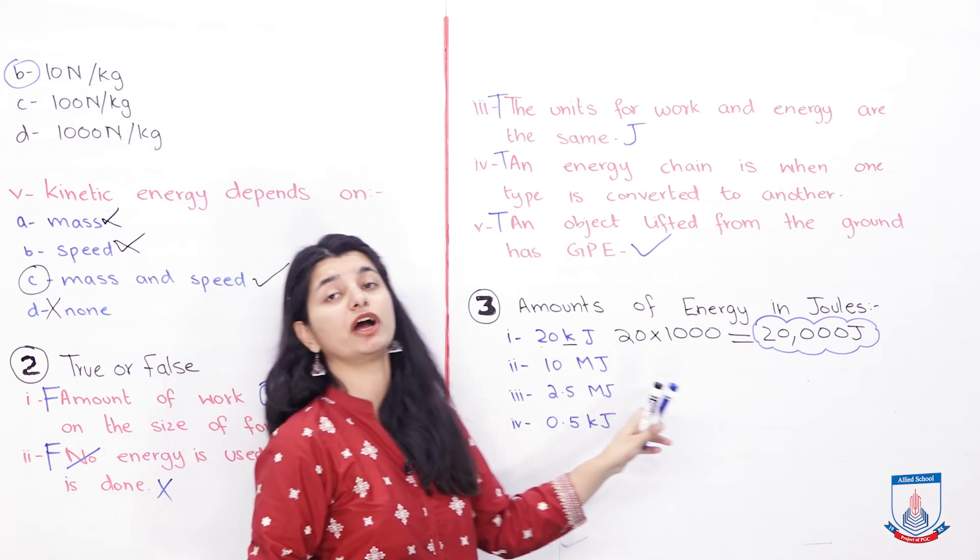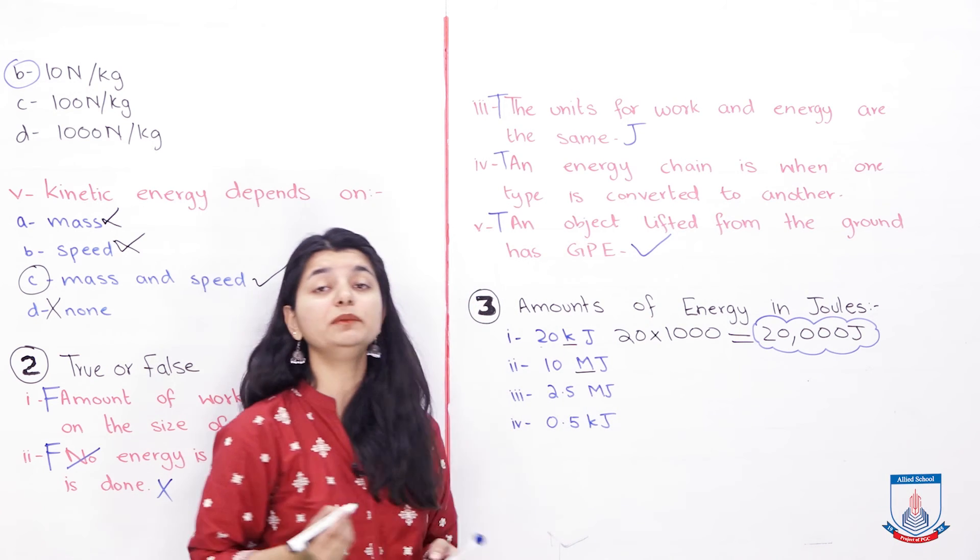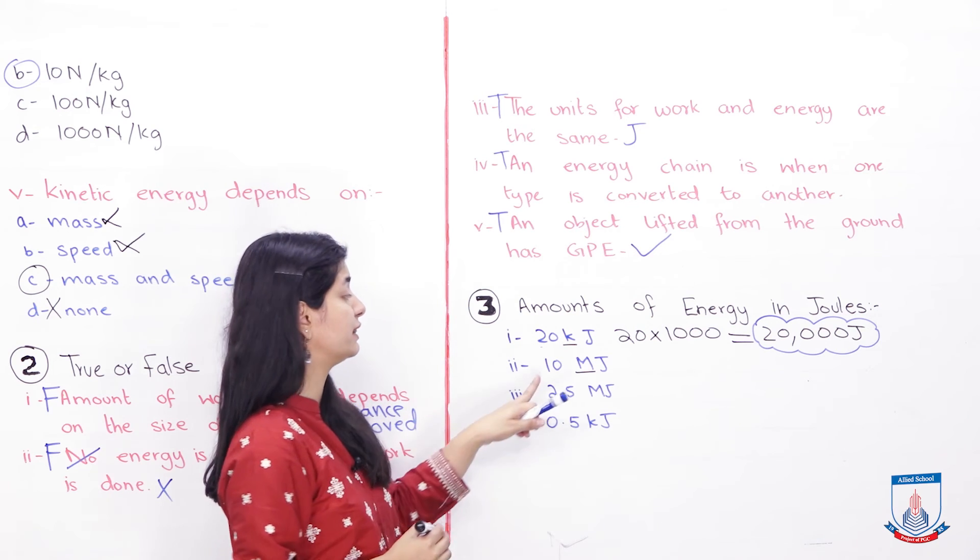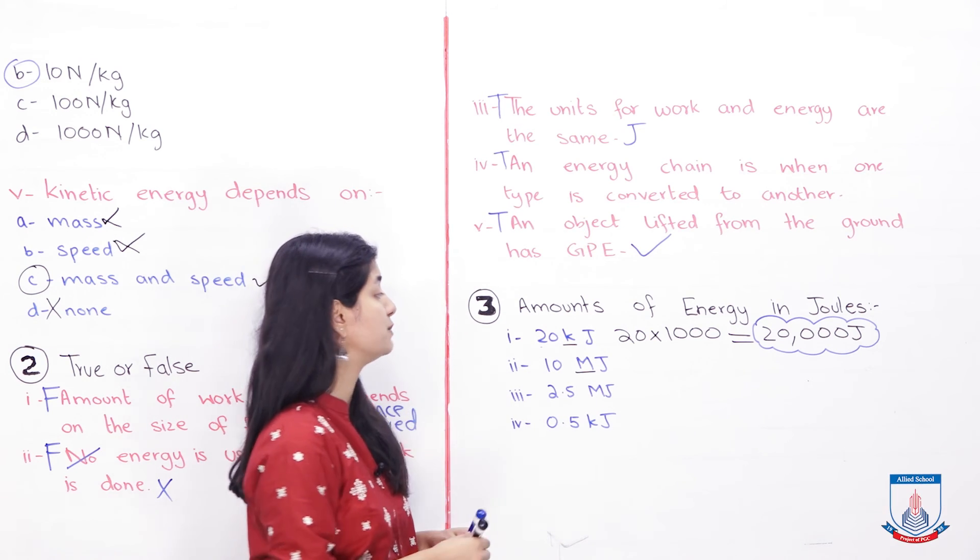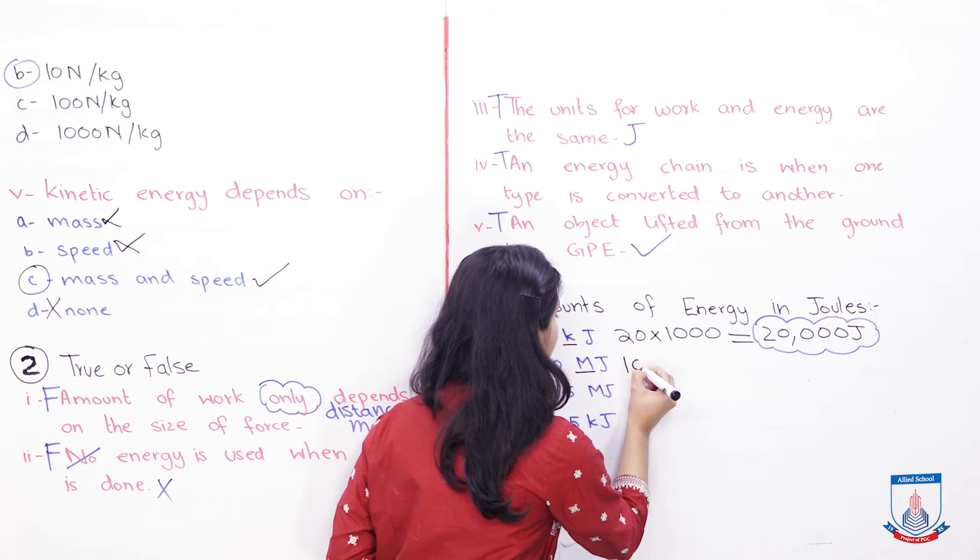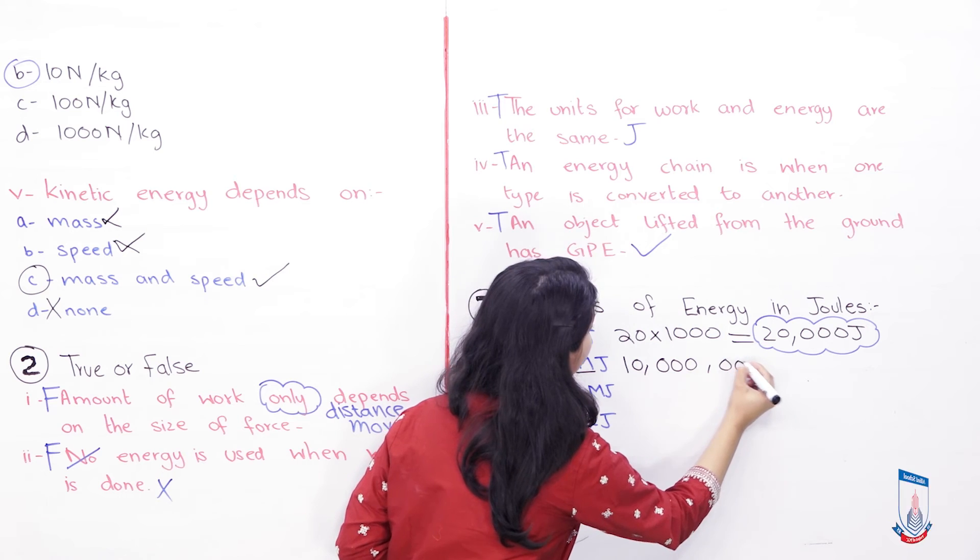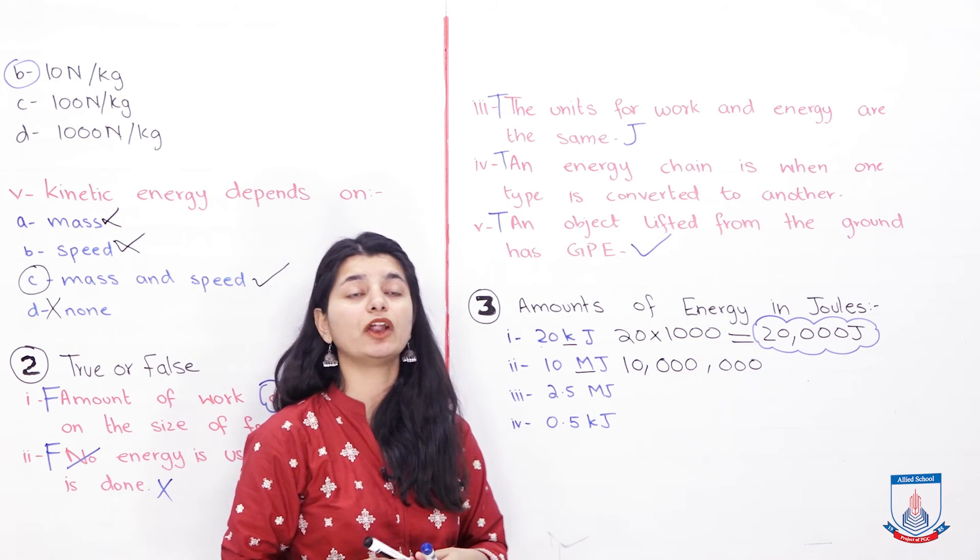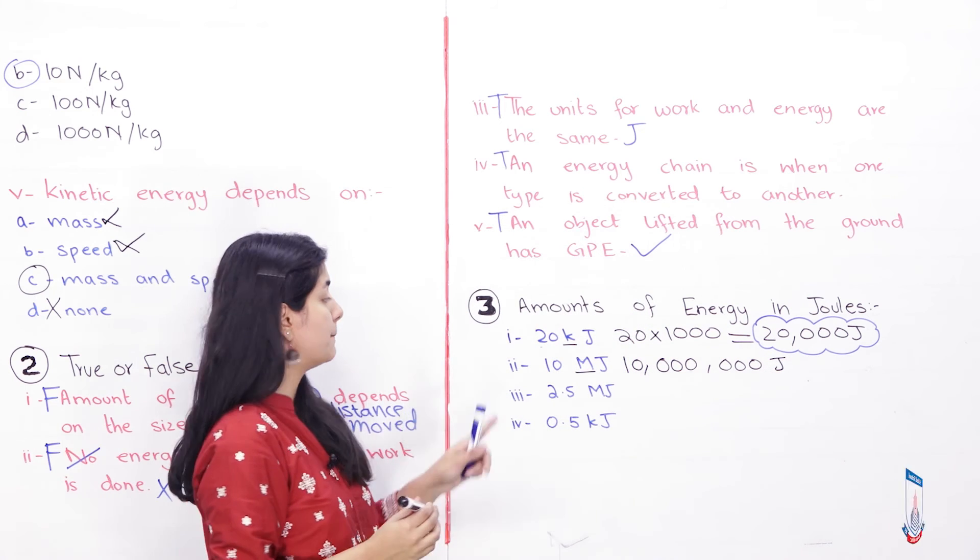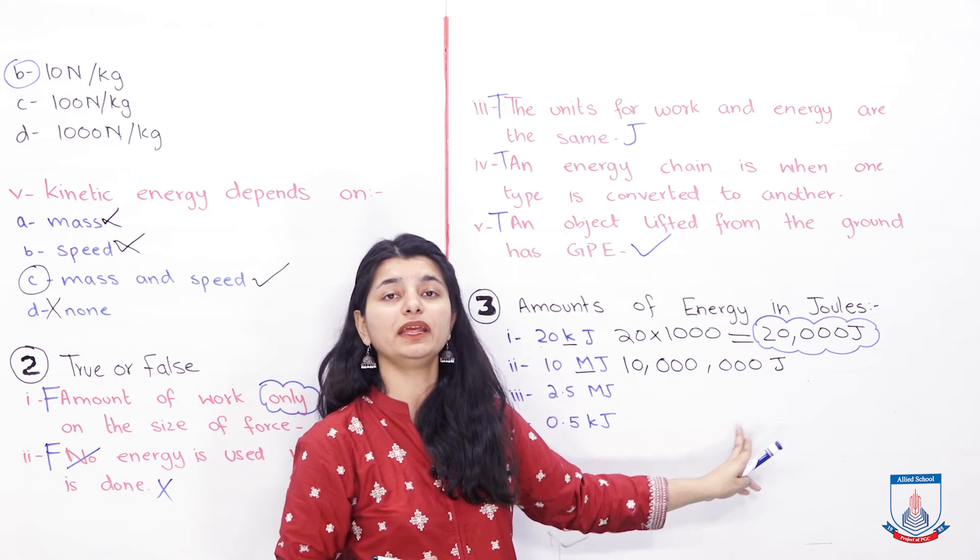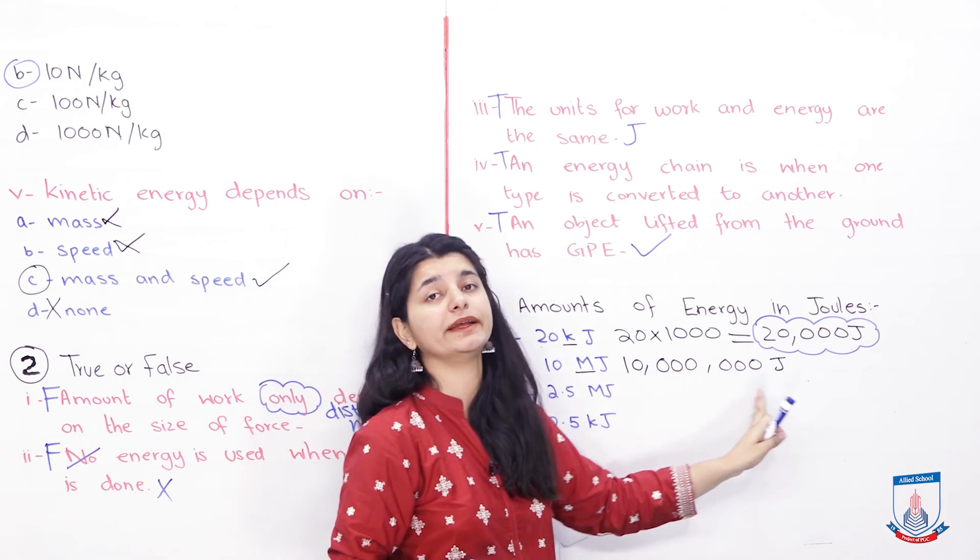Then 10 mega joules. Now how do you convert this? How many units in mega? 1 million. So you will be multiplying this number by a million. And what do you get when you do that? You will get six zeros. 10, 1, 2, 3, 1, 2, 3. Because you have multiplied it by a million, and you have 10 million joules. So mega joules converted into joules. What was 10 mega joules will be equal to 10 million joules.